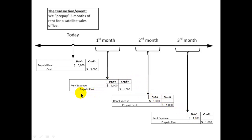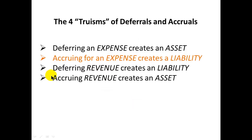So that was deferring an expense creating an asset. We deferred rent expense to the appropriate month, and by doing that we created this asset called prepaid rent. The second truism: accruing an expense is going to create a liability.